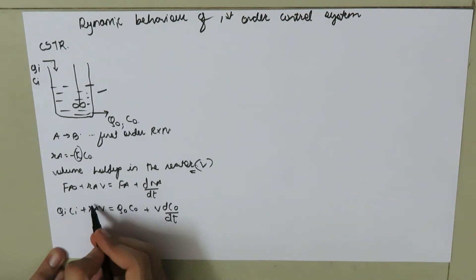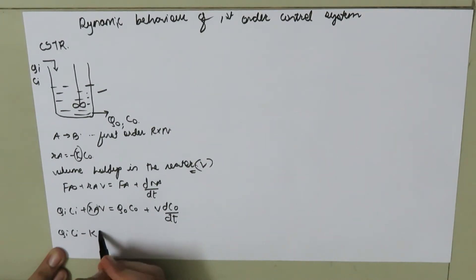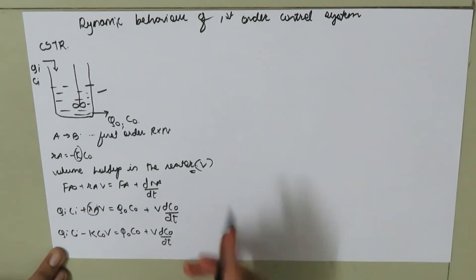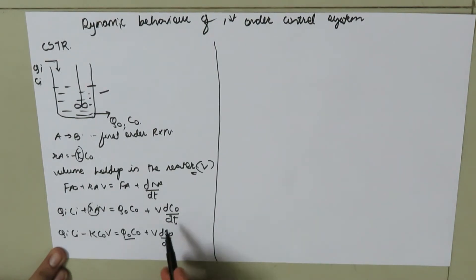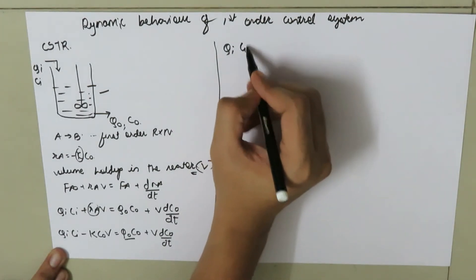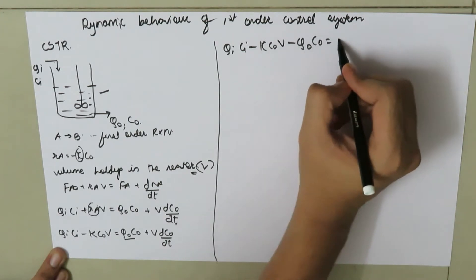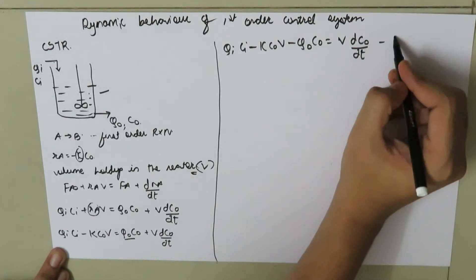Substituting the rate expression, since the rate of generation of the reactant is always negative: QI times CI minus K times CO times V equals QO times CO plus V times dCO by dT. Rearranging, bringing all terms to one side and the change in concentration with respect to time on one side: QI times CI minus K times CO times V minus QO times CO equals V times dCO by dT. We call this equation number one.